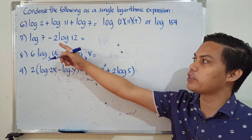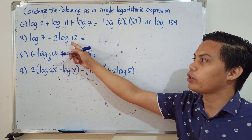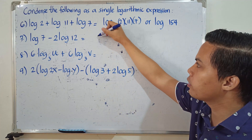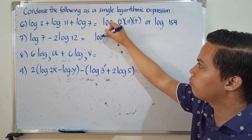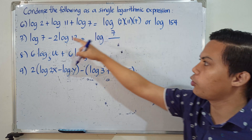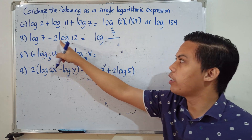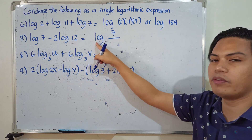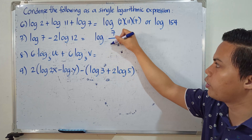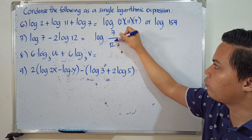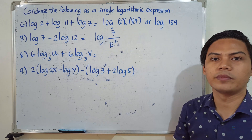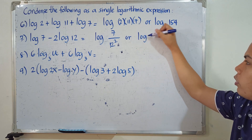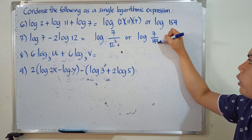Number 7: the logarithm of 7 minus 2 times the logarithm of 12. This will be written with the logarithm of 7 as the numerator. For the denominator, we apply the power rule: 2 becomes the exponent of 12, giving 12 squared. So we have logarithm of 7 over 12 squared. You can simplify further: the logarithm of 7 over 144.